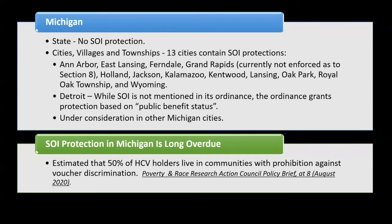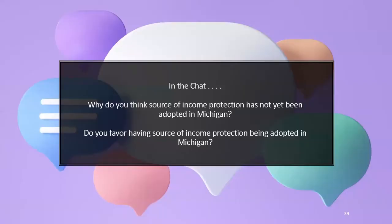It's long overdue. The Poverty and Race Research Action Council (PRRAC) estimates that 50% of voucher holders already live in communities with some type of source of income protection. I think it's inevitable. I just have trouble understanding why we're waiting to have it adopted. Why hasn't it been adopted in Michigan? Do you favor having source of income protection adopted in Michigan?